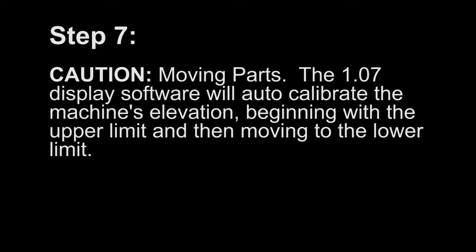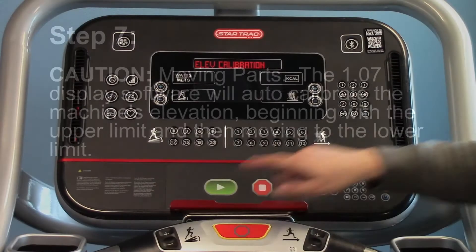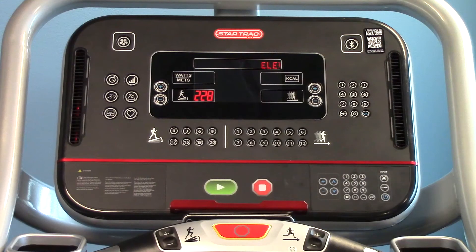Step 7. Moving parts. The 1.07 display software will auto-calibrate the machine's elevation, beginning with the upper limit and then moving to the lower limit.